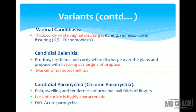In Candidial balanitis, the patient has pruritus, erythema, and curdy white discharge over the glans and prepuce with fissuring at the margins of the prepuce. Fissuring is very characteristic of Candidial balanitis and is not seen in balanitis due to other causes. A diagnosis of Candidial balanitis should prompt checking of blood sugar levels, as it is a marker of diabetes mellitus.